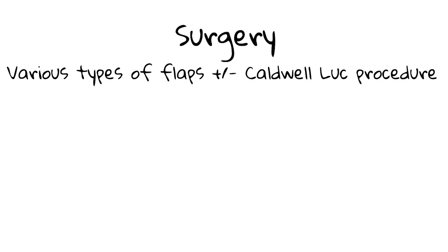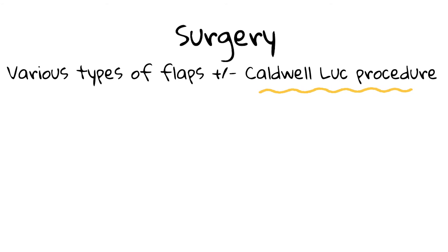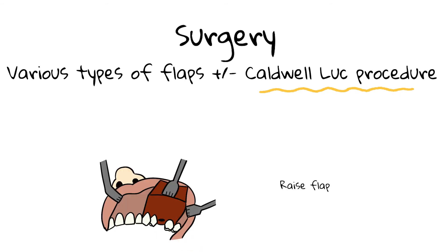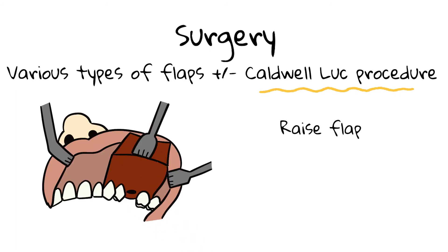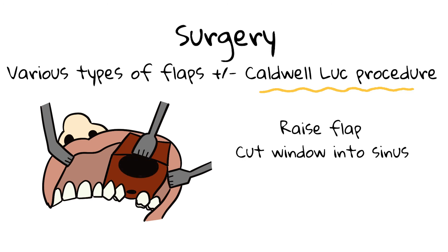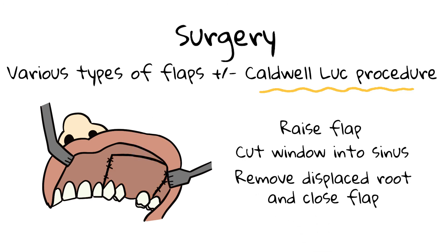There are various types of flaps that can be used to close an OAC depending on size and position of the defect. A procedure called the Caldwell-Luc may be needed if there is a displaced root into the sinus. This involves making a horizontal incision in the buccal sulcus from the maxillary lateral incisor to the first molar, then raising a mucoperiosteal flap. A window is then cut into the sinus with an osteotome, followed by removing the displaced root and closing the flap.